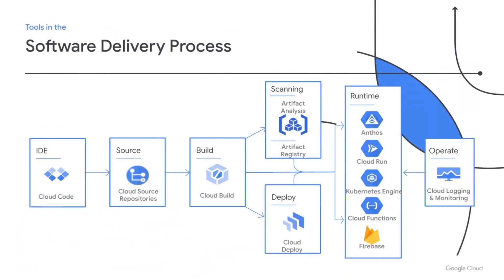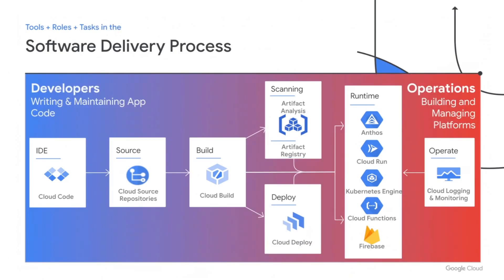So let's dive a little deeper into the software delivery process. This is a diagram we sometimes use at Google Cloud to talk about the tools we have available that enable each stage of the software delivery process — from writing code, to getting the applications running in production, to monitoring those production applications. These processes roughly align with two broad roles: developers who write and maintain app code, and operations professionals who run those applications in production and other environments. There are all kinds of specific roles within this spectrum, and where one ends and another begins varies quite a lot from one company to another. It's like a gradient.